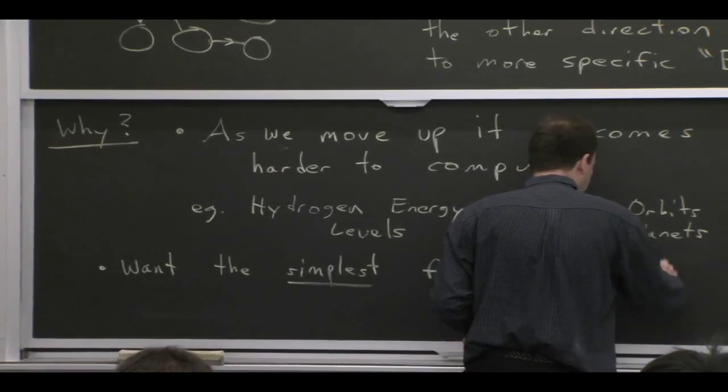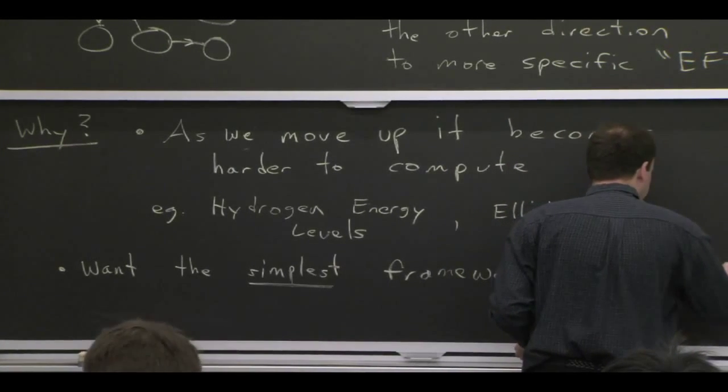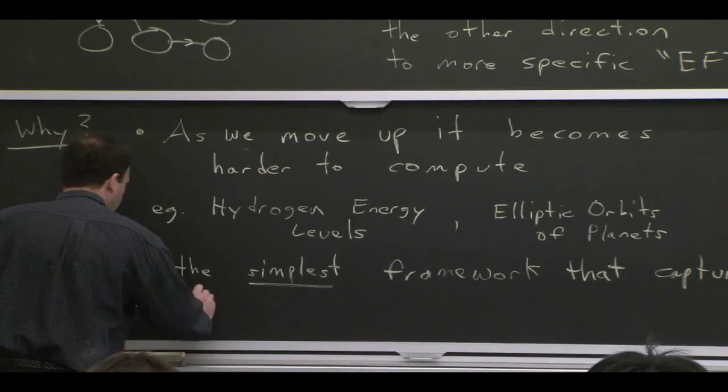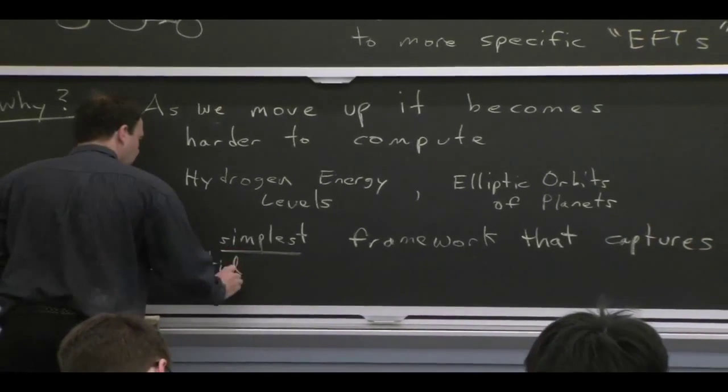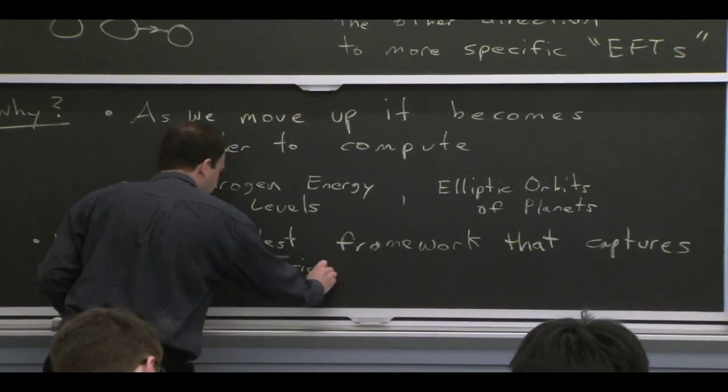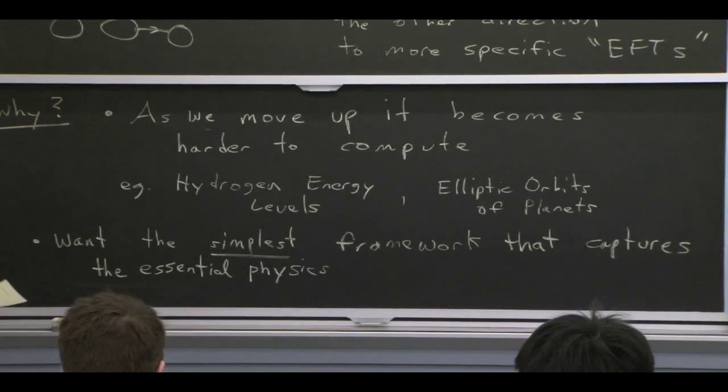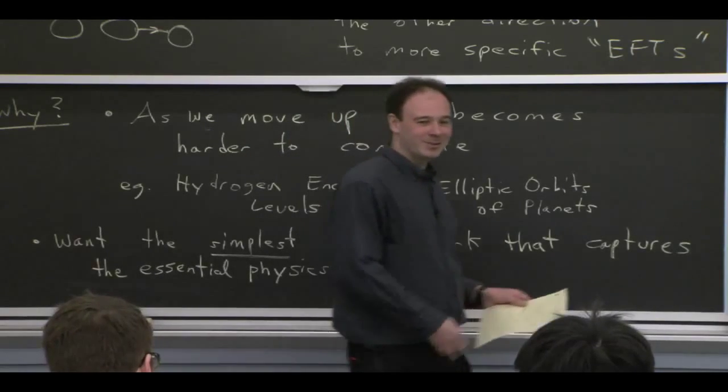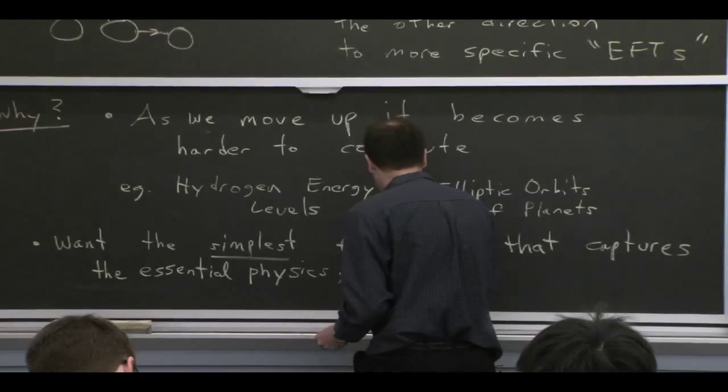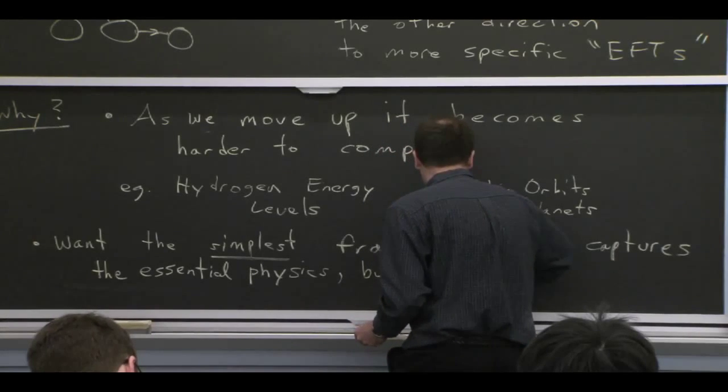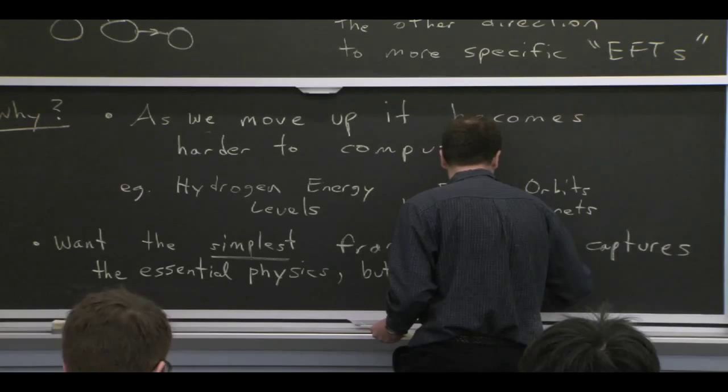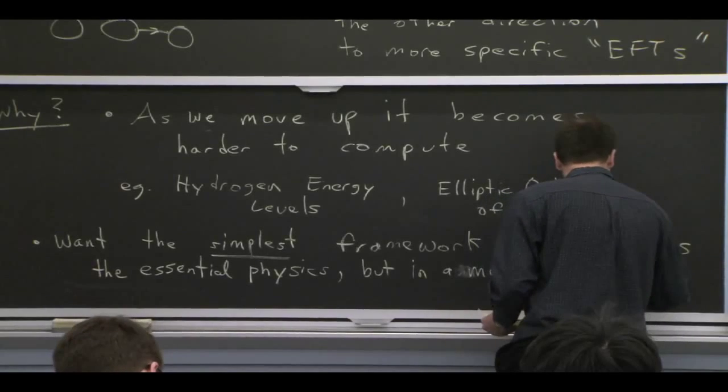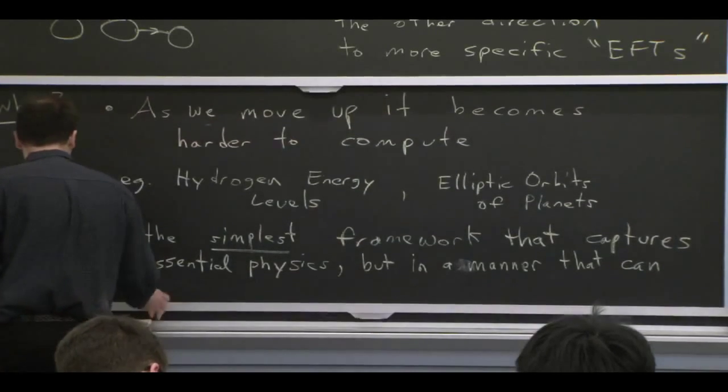So what we want when we think about effective field theory is we want the simplest framework that captures the essential physics. We don't want to carry along for the ride a whole bunch of superfluous things that are not important for the problem we're trying to deal with. But we also don't want to give up anything. So we're very demanding. So even if we're giving up something in our leading order description, we want to retain the ability to correct that leading order description order by order in some expansion, so that we can make it as precise as we desire.